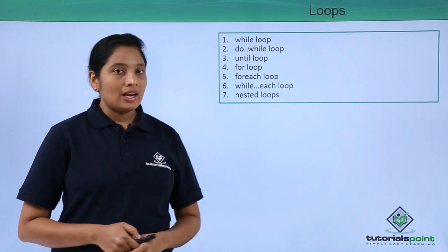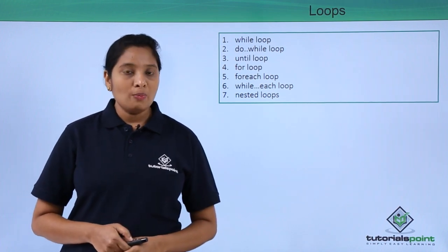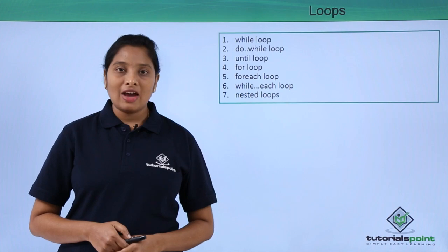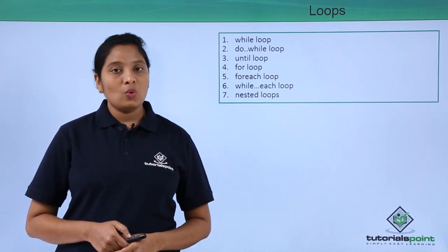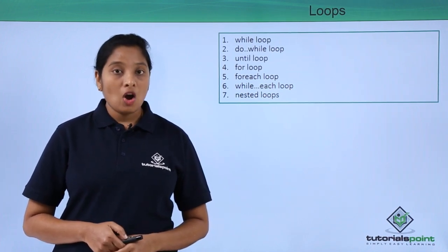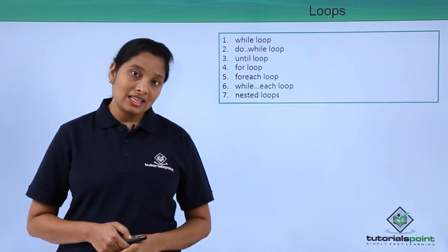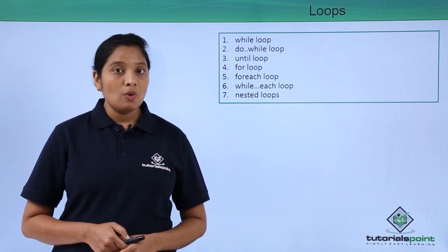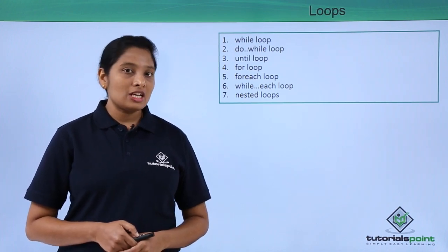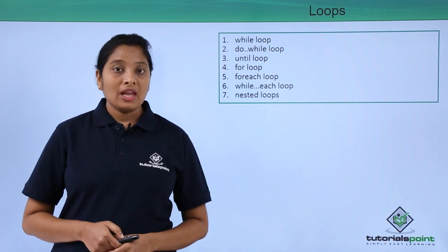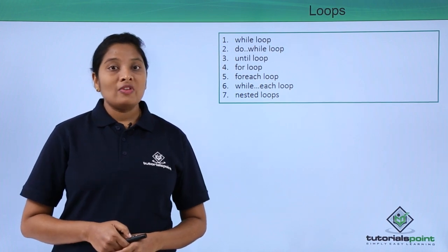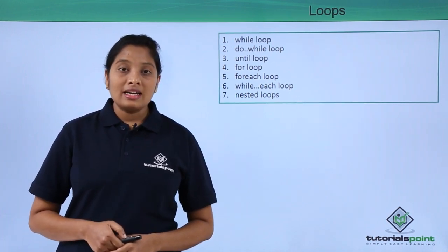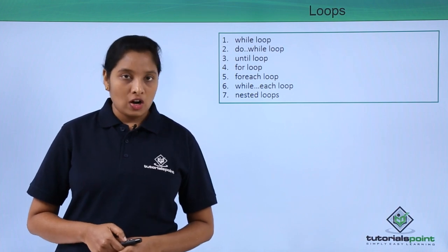First are while and do-while. While loop is executed when the condition is evaluated to true. In do-while, the block is first executed and then the condition is evaluated to true. Until loop is just the opposite of while and do-while — it will be executed only when the condition is evaluated to false.